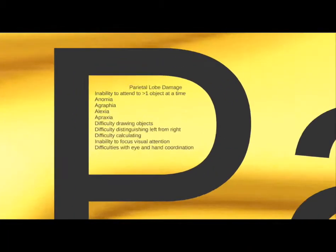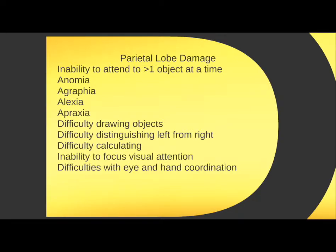Next, let's move on to the parietal lobe. The parietal lobe is essentially where we start to interpret things — we can pull in vision, audible input, and sensation, but in the parietal lobe we have to start to interpret what it all means. A deficit in the parietal lobe gives rise to the four A's: anomia, agraphia, alexia, and apraxia. In addition, there is difficulty drawing objects, distinguishing left from right, and difficulty calculating. The parietal lobe processes incoming information, exchanges it across the corpus callosum, and as a result a person will have difficulty with all interpretive activities — most specifically, an inability to attend to more than one object at a time.